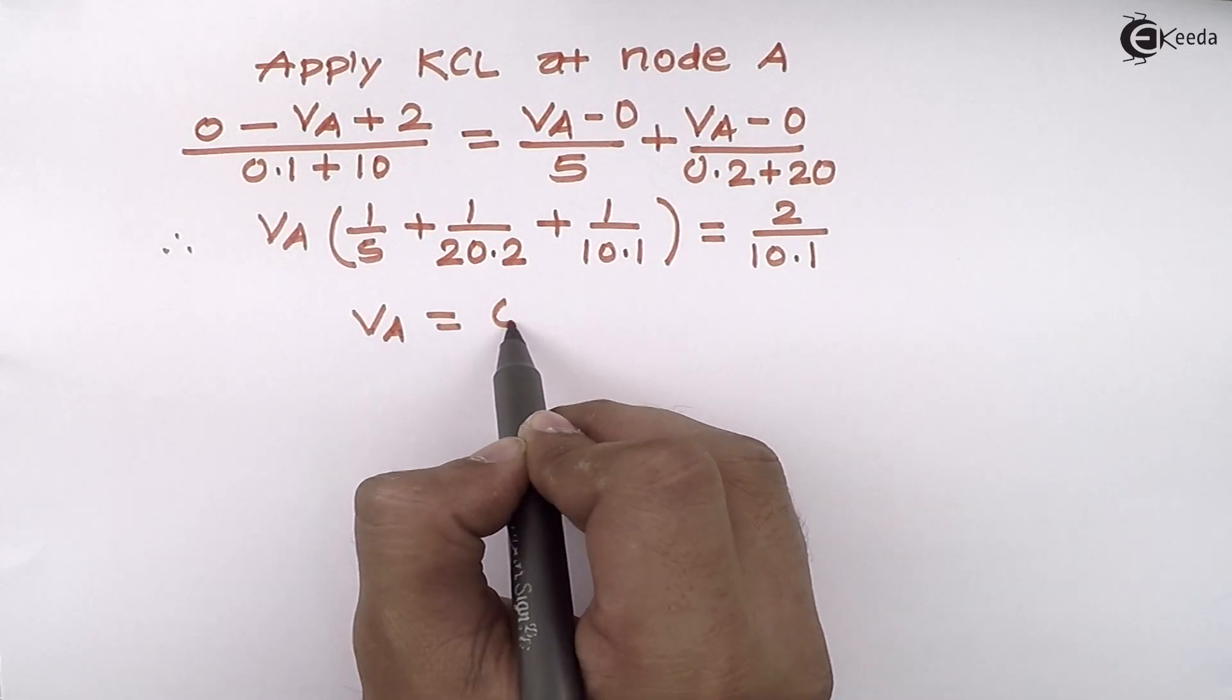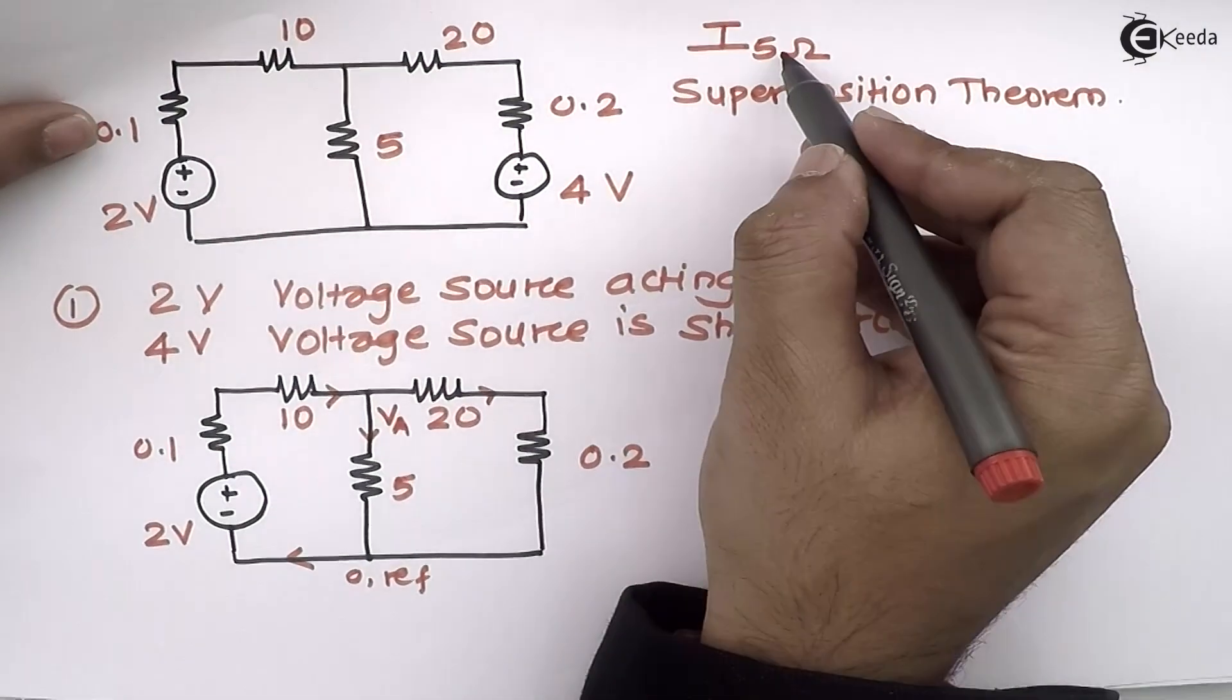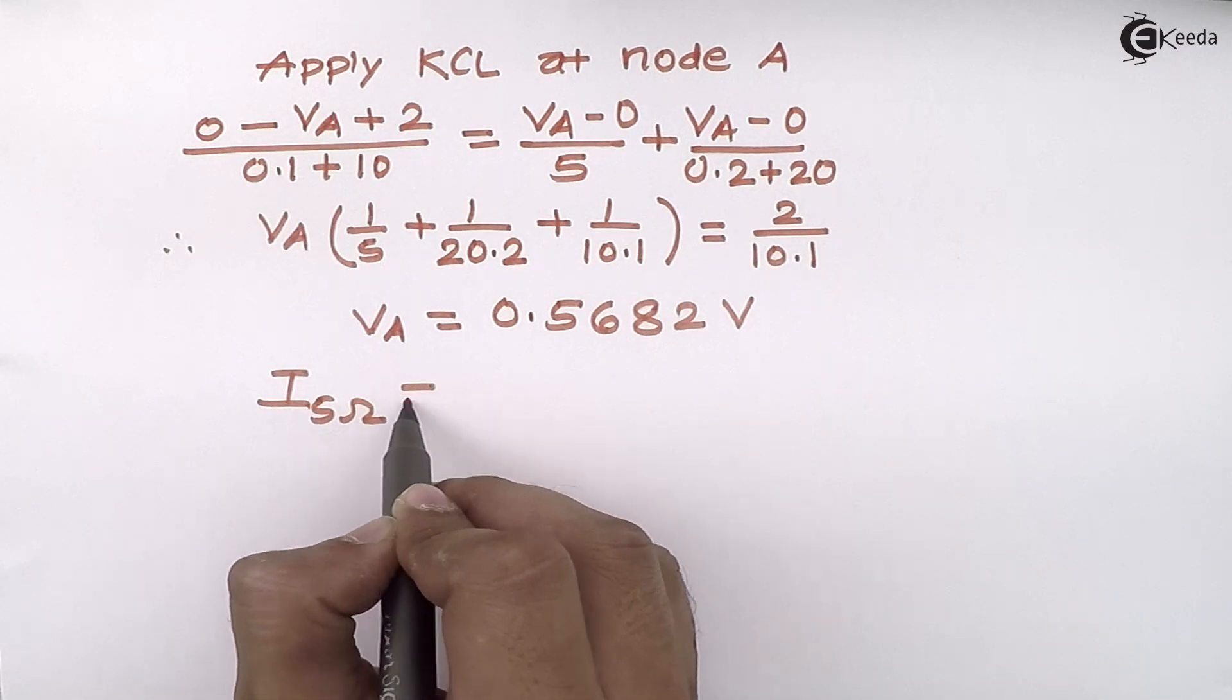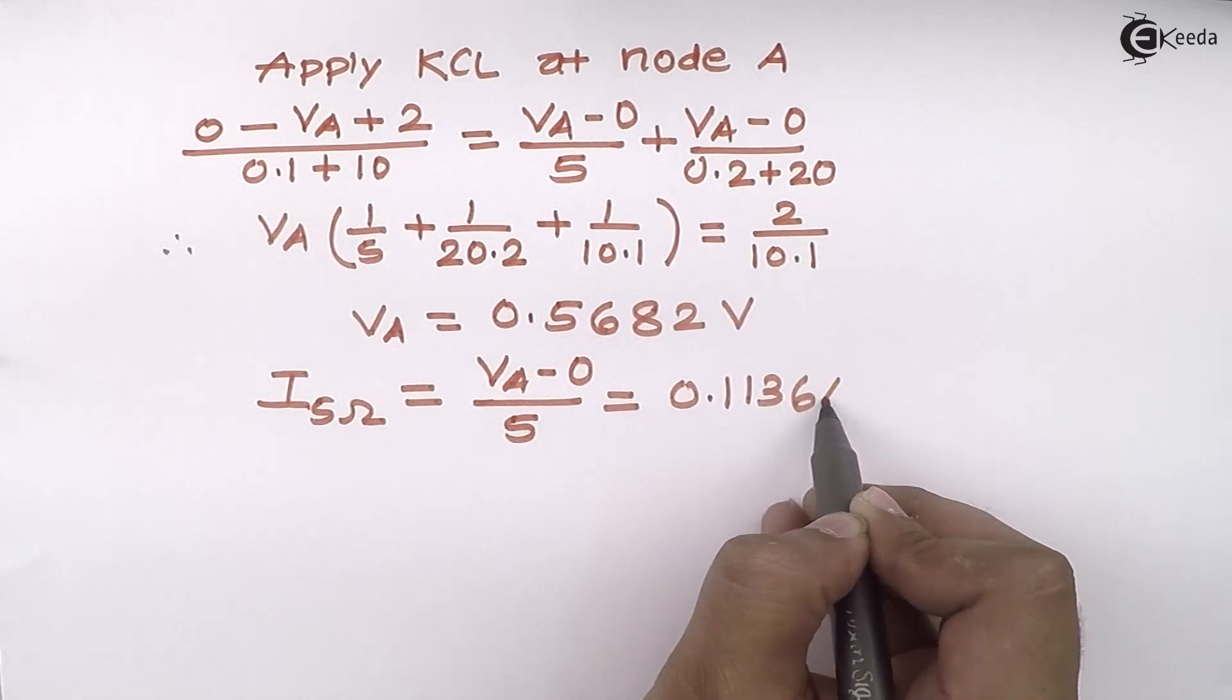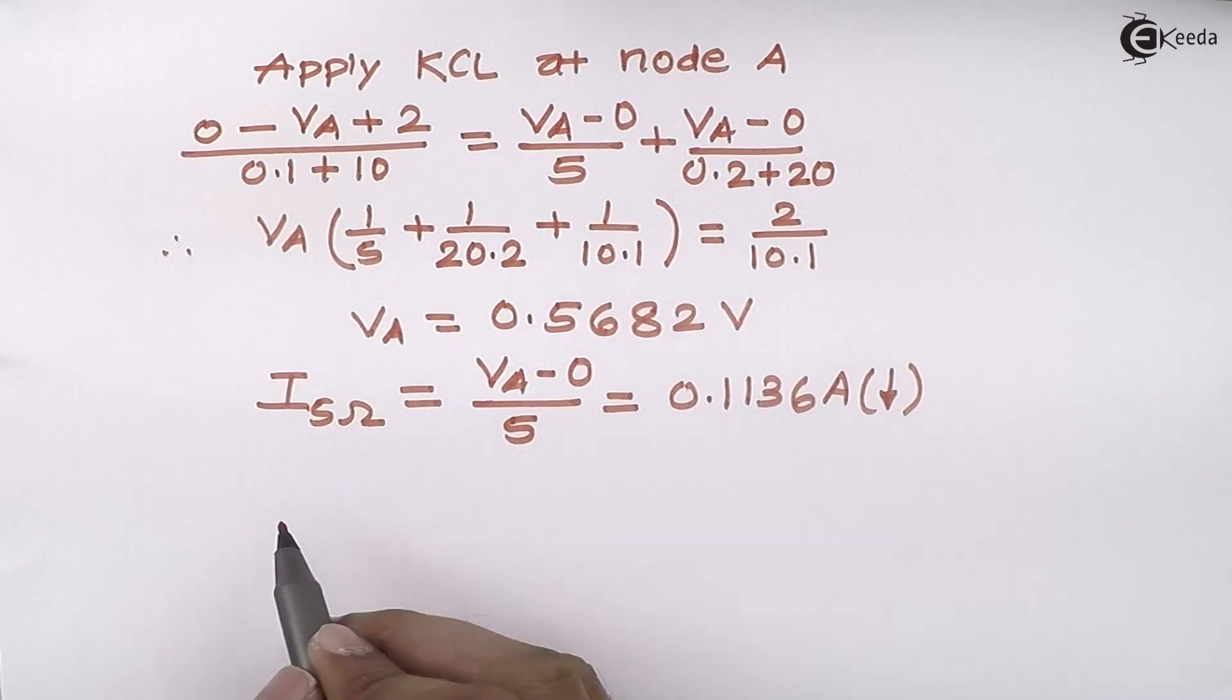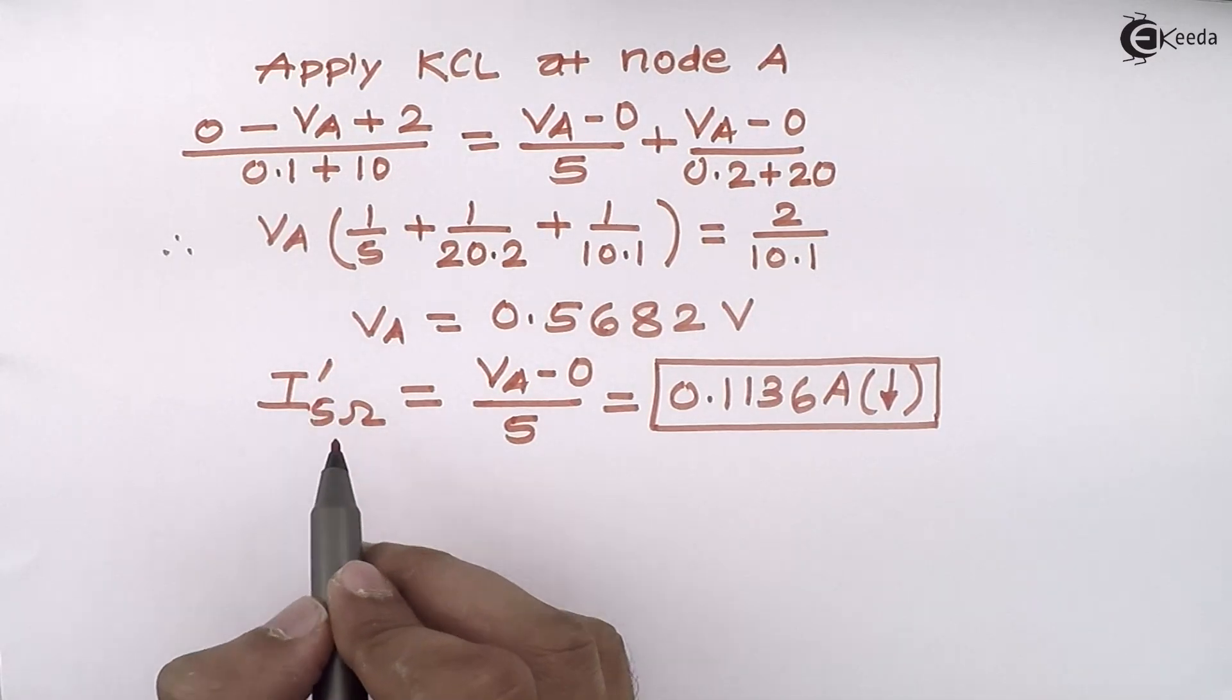My objective is to get current flowing through the 5 ohm resistance. So current flowing through 5 ohm resistance equals (VA - 0) divided by 5. The answer I am getting is 0.1136 amperes, and I am getting a positive answer, which means whatever direction I have assumed is correct. But this is not the final answer because I am getting this current only because of one voltage source, and that is 2 volts. So I will mention here I'5Ω, half answer. Let's calculate the remaining half.